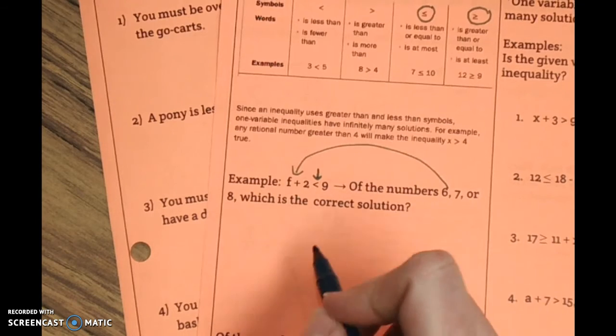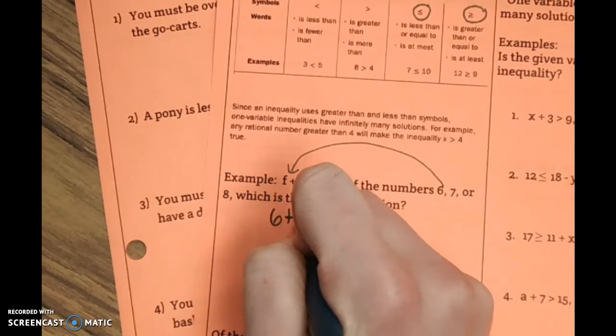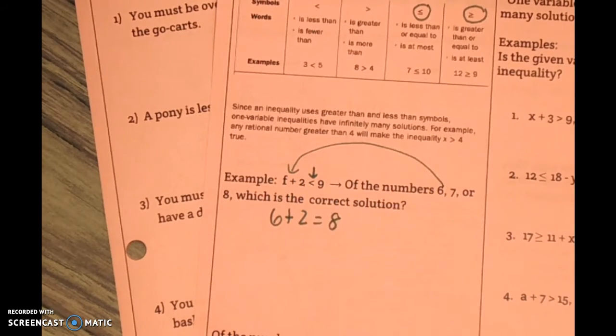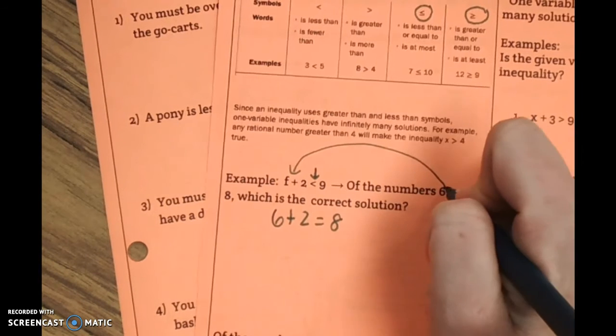Okay, so when we plug 6 in, 6 plus 2 equals 8. Now, you have to ask yourself, is 8 less than 9? It is. So, 6 is the correct one.